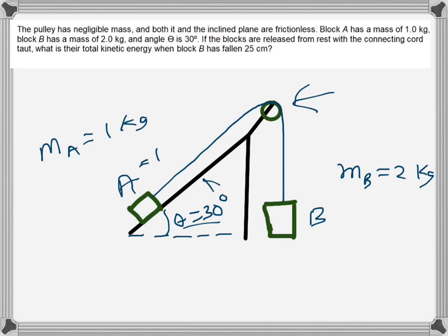The blocks are released from rest with the connecting cord taut. What is their kinetic energy when block B has fallen 25 centimeters? So when block B has gone down, it has fallen 25 centimeters. What is the kinetic energy at that moment?